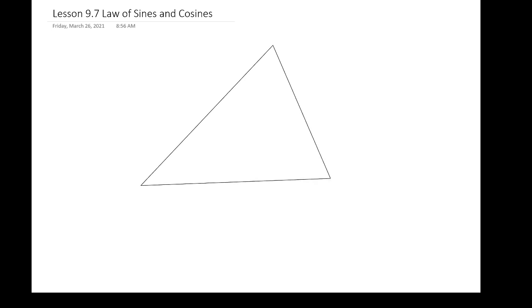Here we have a triangle, and so far what we've explored is that we can solve for the missing parts of any right triangle given a certain amount of information. For example, if we're given all the side lengths we can use trigonometric ratios to figure out the two acute angles, or if we're given one side length and one angle we can figure out the other side lengths, and if we're only given two side lengths we can figure out the third side.